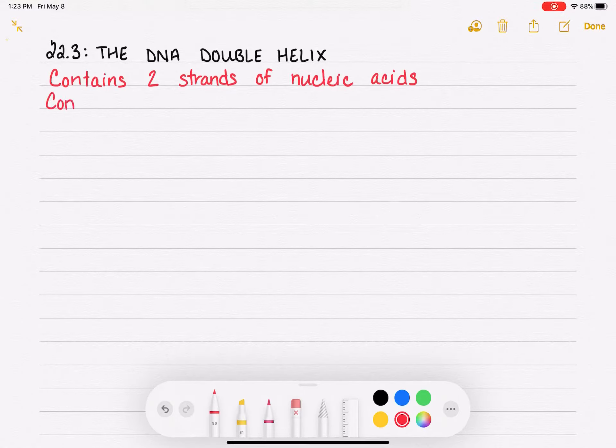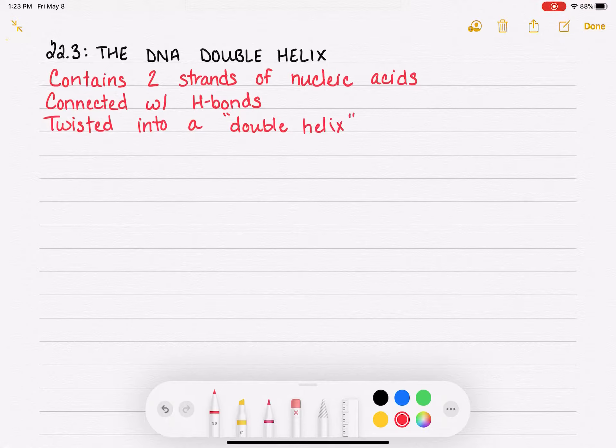So the two strands are connected with hydrogen bonds. And much like what we saw for proteins, the connection, the hydrogen bonding between the two strands of DNA causes it to twist into a helical shape.